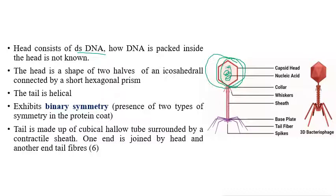The head has the shape of two halves of an icosahedron connected by a short hexagonal prism. The tail is helical in shape. Bacteriophages exhibit binary symmetry — meaning the presence of two types of symmetries. The tail is made up of a tubular core surrounded by a contractile sheath.